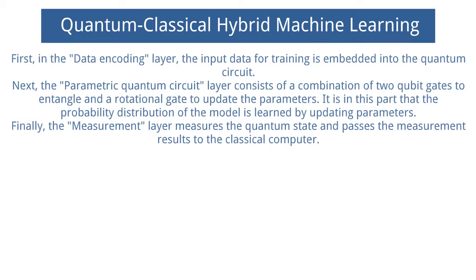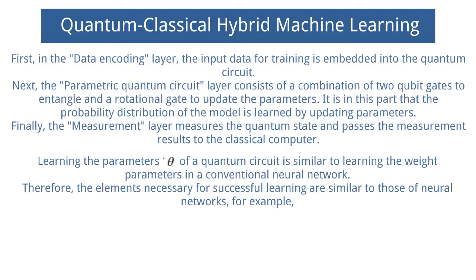Finally, the layer measures the quantum state and passes the measurement results to the classical computer. Learning the parameters theta of a quantum circuit is similar to learning the weight parameters in a conventional neural network.